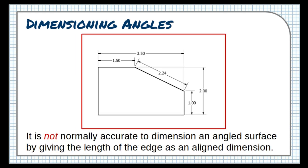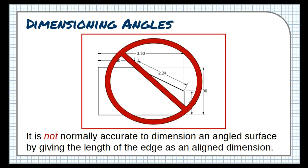In general, we don't dimension angles like this, by showing the length of the angled surface. Most of the time, this length is not exact, and is the accidental result of precisely located endpoints or angles. The length reported in this dimension is likely a rounded value that will not help the manufacturer produce the part accurately.